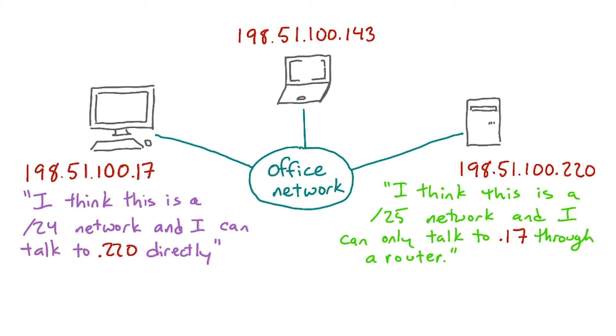Now, why does this matter? Subnet misconfiguration can cause some pretty weird problems on a server network especially. Things like, one machine thinks that it can talk to another machine directly, but the other thinks that it has to talk back through a router, and that can cause very strange communications problems. Getting a good grasp of how this stuff works can save you a lot of trouble if you're ever setting up a server network.